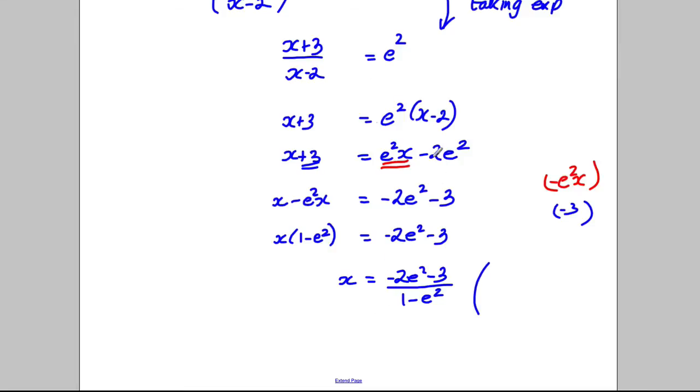Okay, and in the book you may see it like, if you had done a different operation here but got all the x's to this side, you would have got (2e² + 3) divided by (e² - 1), which is just the same. It's just top and bottom have been multiplied by negative 1, which just doesn't change the fraction.